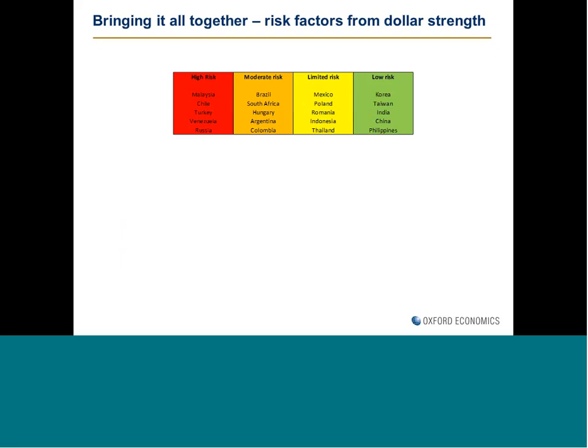The final slide groups these countries into four groups: high risk, moderate risk, limited risk, and low risk. These should be taken as a reference rather than a very decisive division, and there's always some scope for countries to migrate a little from one group to another. The countries we'd be most concerned about have some combination of high debt, high external debt, and high commodity reliance. That cocktail — along with a high dollar share within external debt — is the particularly dangerous one. Those include places like Malaysia, Turkey, Russia, and Venezuela. At the other end of the spectrum, we'd be less worried about places like Korea, Taiwan, and India.